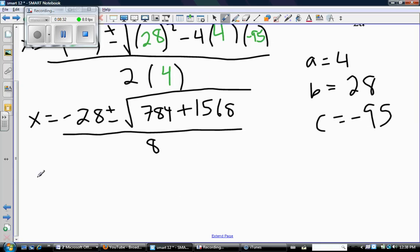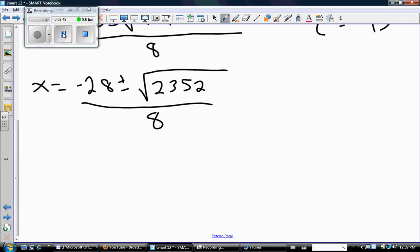So x equals negative 28 plus or minus. So add 784. So the square root of 2352 over 8. And now find that square root. So when I take the square root, I'm not going to worry about whether or not to use decimals. I mean, it's a word problem. You use decimals in word problems unless something major says not to. So there we go. The square root of 2352 is just about 48.5.